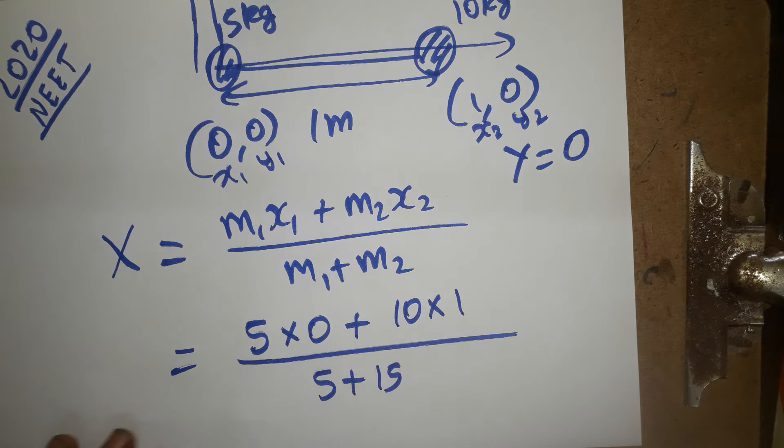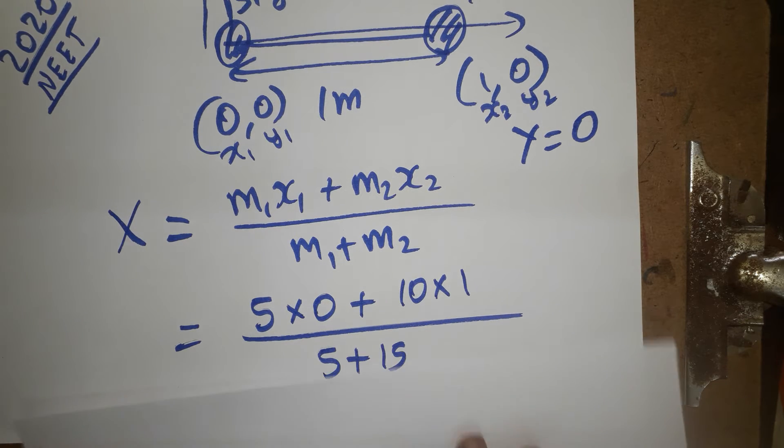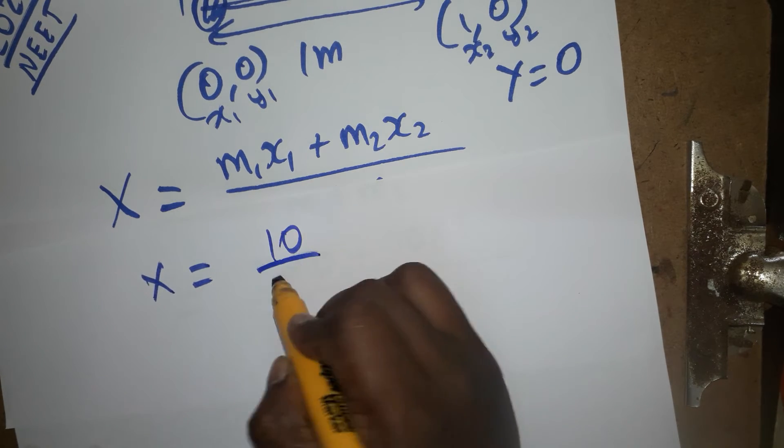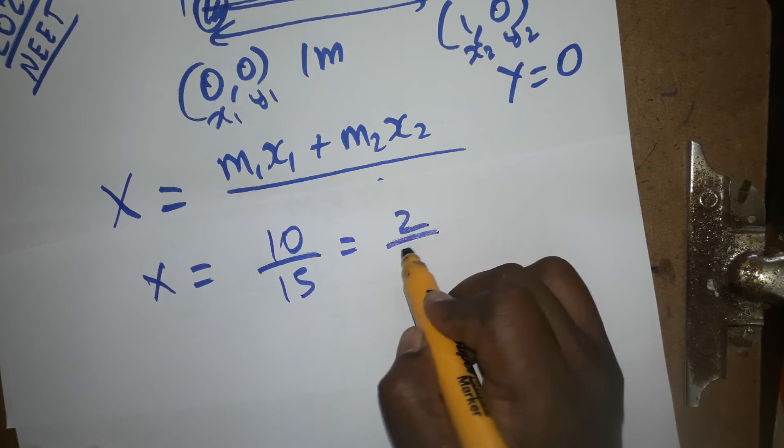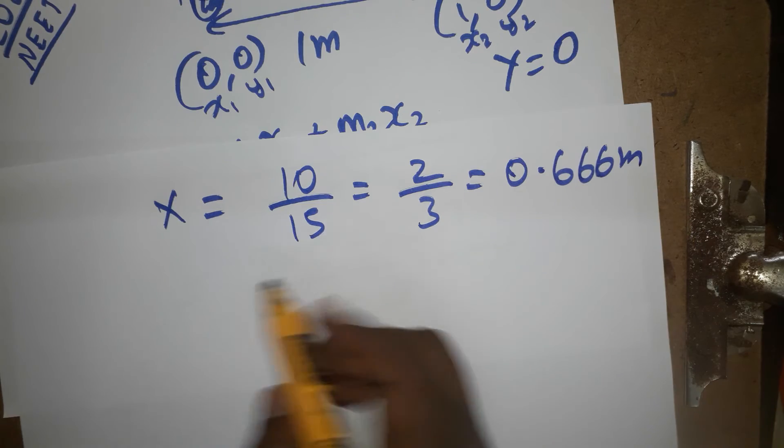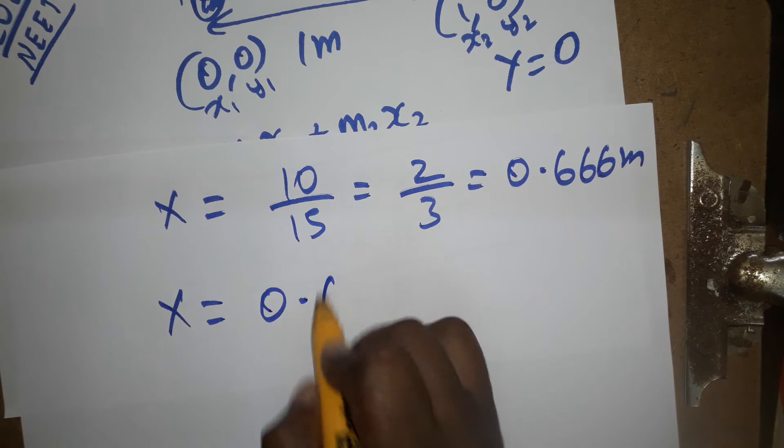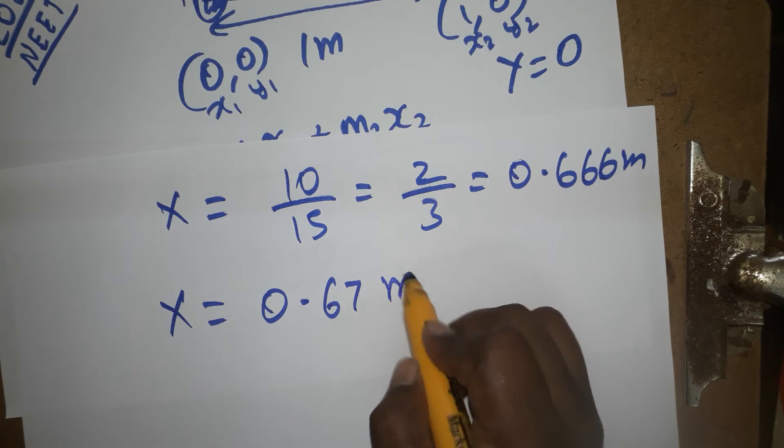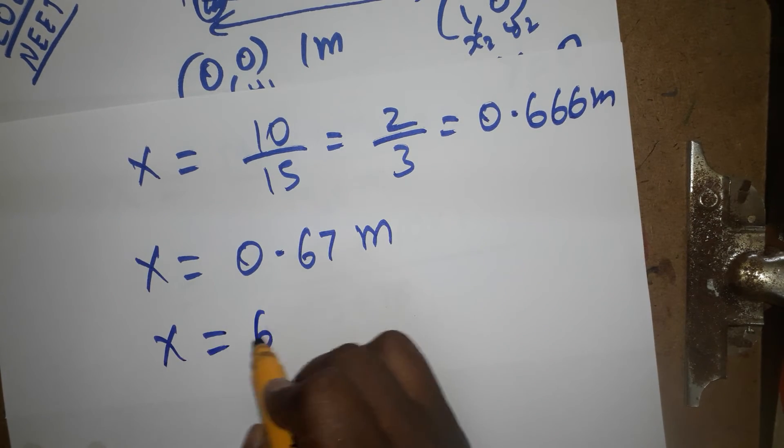It is very simple answer. So, 10 divided by 15. So, x value is going to be 10 divided by 15, which is going to be 2 by 3. 2 by 3 means the answer is going to be 0.6666 meter. So, x is going to be 0.67 meter or we can take it as x-axis 67 centimeter.